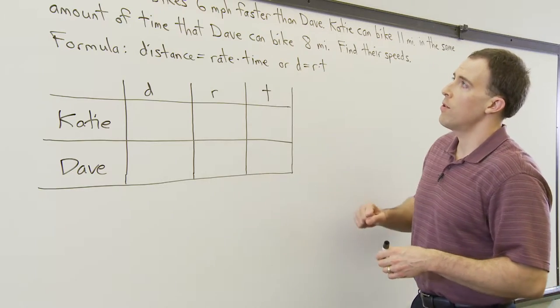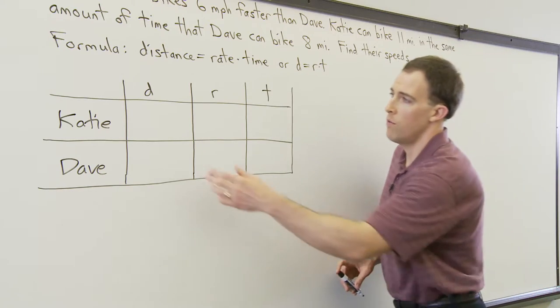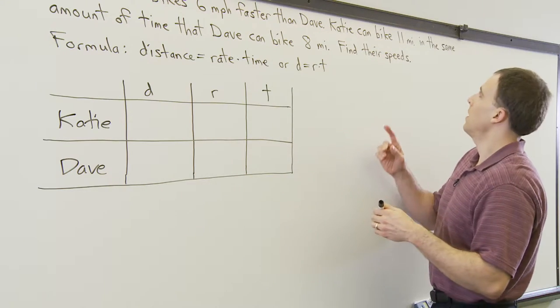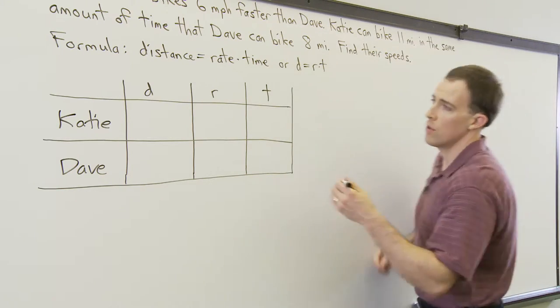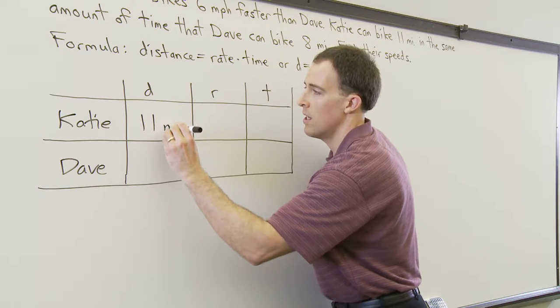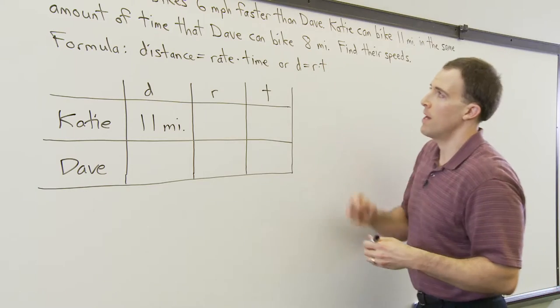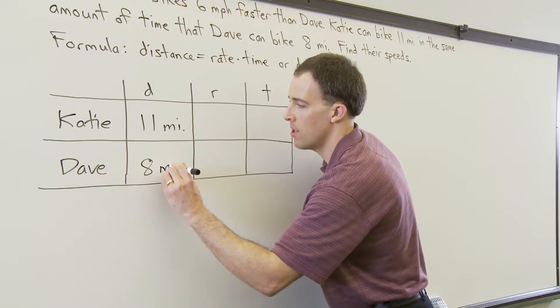Look carefully through the information and see if we know the distances that either one of them traveled. It says here Katie bikes 11 miles, so I'm going to put 11 miles in Katie's distance box. And we also have that Dave can bike 8 miles. So 8 miles goes as Dave's distance.